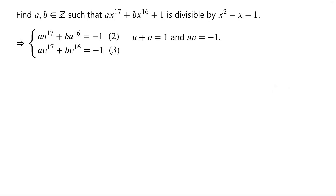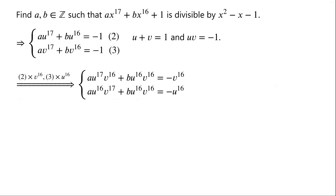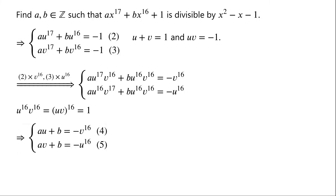a and b can be worked out by solving this system of equations. Multiply equation 2 by v to the power of 16 and multiply equation 3 by u to the power of 16. We have a times u to the power of 17 times v to the power of 16 plus b times u to the power of 16 times v to the power of 16 equals negative v to the power of 16, and a times u to the power of 16 times v to the power of 16 plus b times u to the power of 16 equals negative u to the power of 16. Since u times v to the power of 16 times v to the power of 16 equals uv all to the power of 16 which equals 1, the system becomes: a·u + b = −v¹⁶ and a·v + b = −u¹⁶.